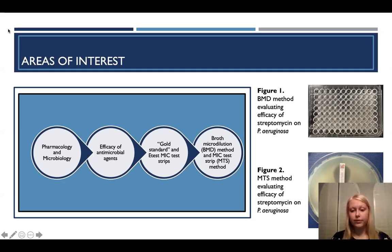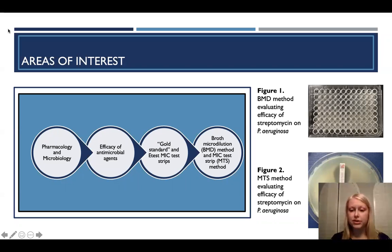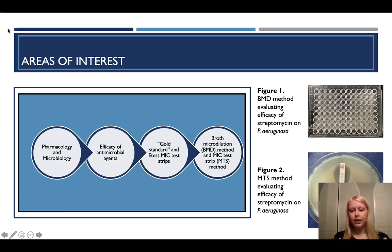In figure two, you can see our second method, which is commonly used in clinics and hospitals: the MTS method. It uses minimum inhibitory concentration test strips. These strips have a logarithmic scale of different concentrations of antimicrobial agent — the lowest concentrations are at the very bottom of the scale and the highest concentrations are towards the top.